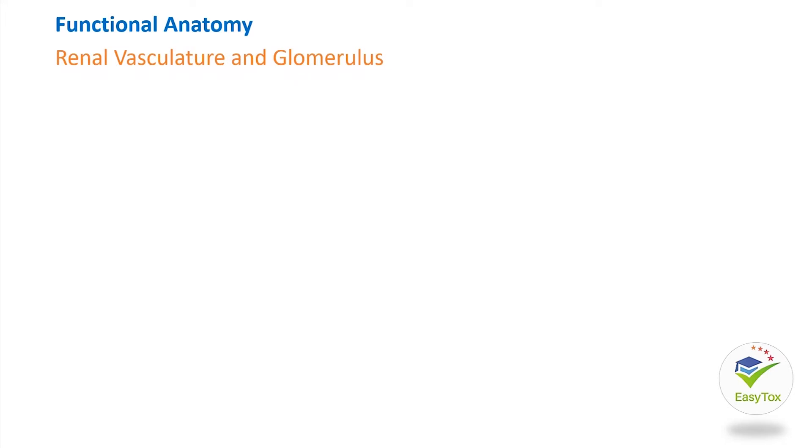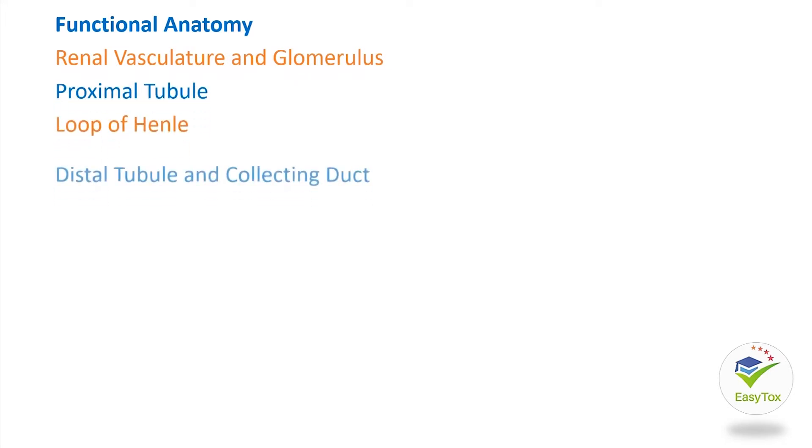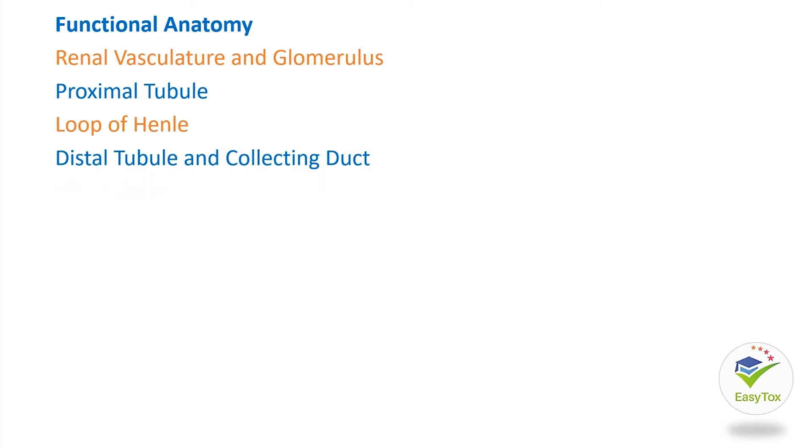This chapter starts with functional anatomy, which includes renal vasculature and glomerulus, proximal tubule, loop of Henle, distal tubule, and collecting duct.